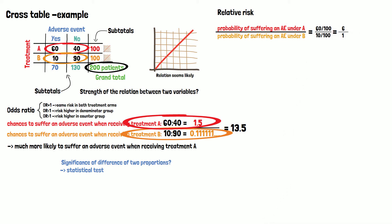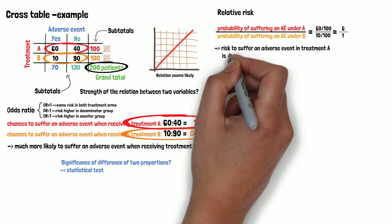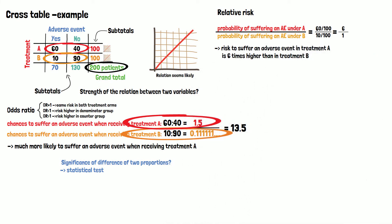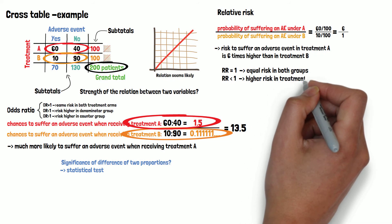So the risk to suffer an adverse event is 6 times higher if you receive treatment A than with treatment B. A relative risk of 1 indicates an equal risk in both treatment groups. A relative risk of smaller than 1 in this case would mean that the risk is higher in treatment group B.